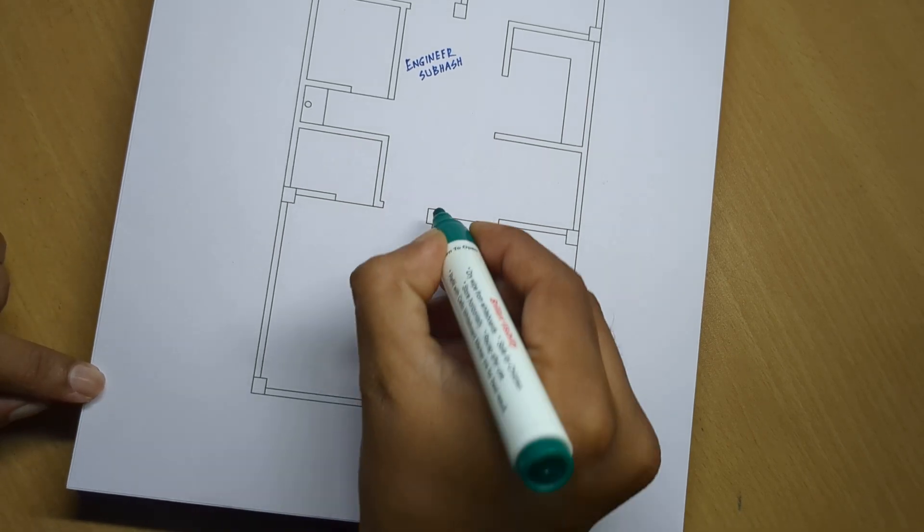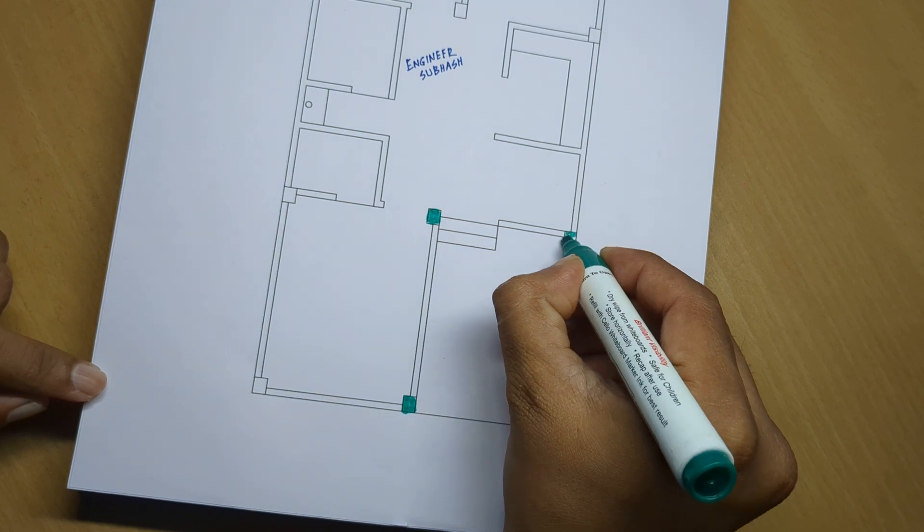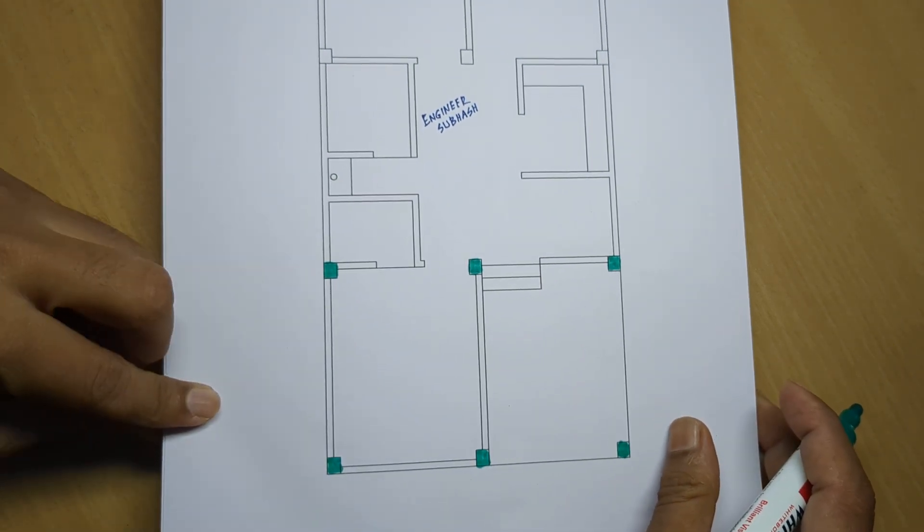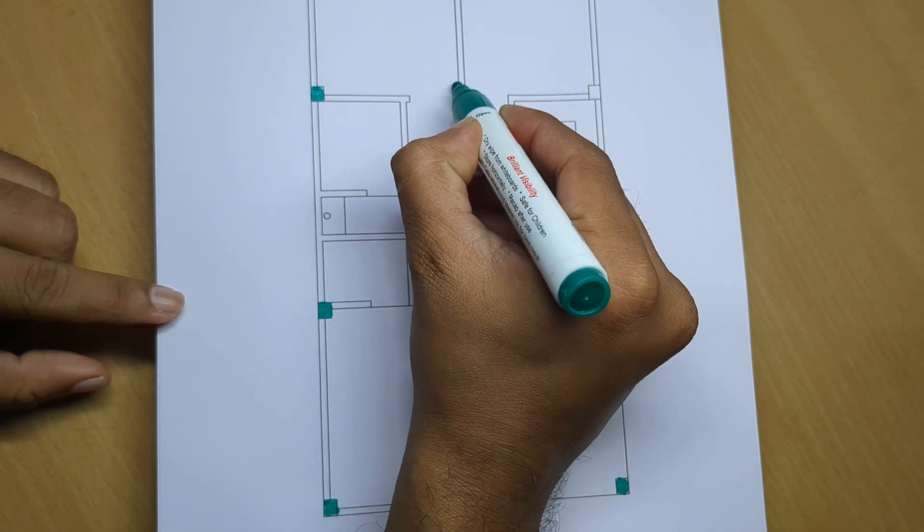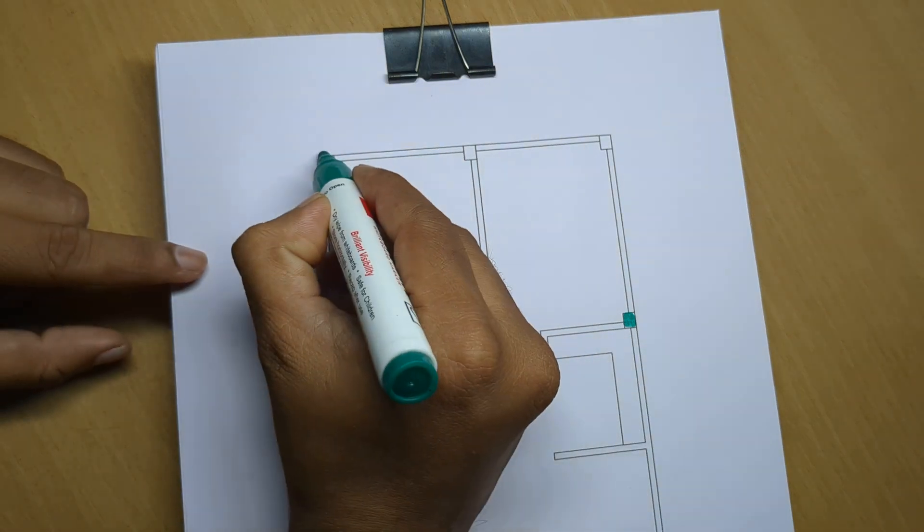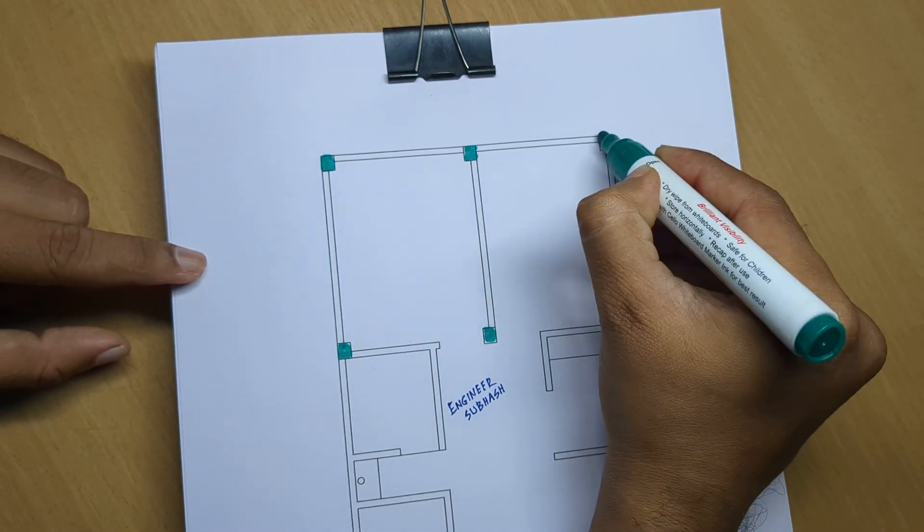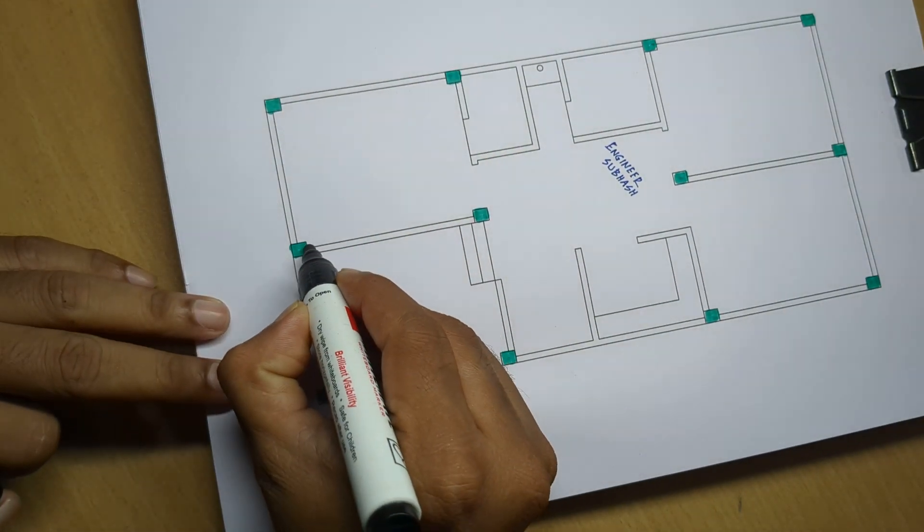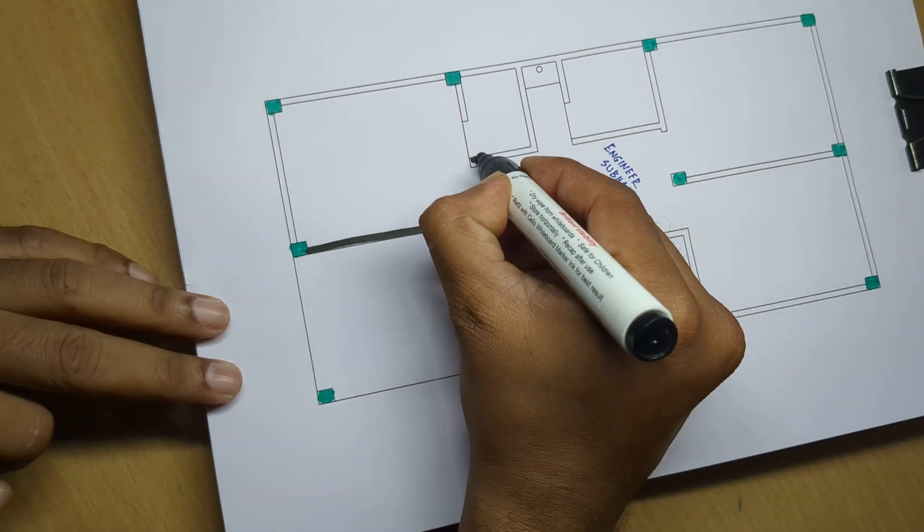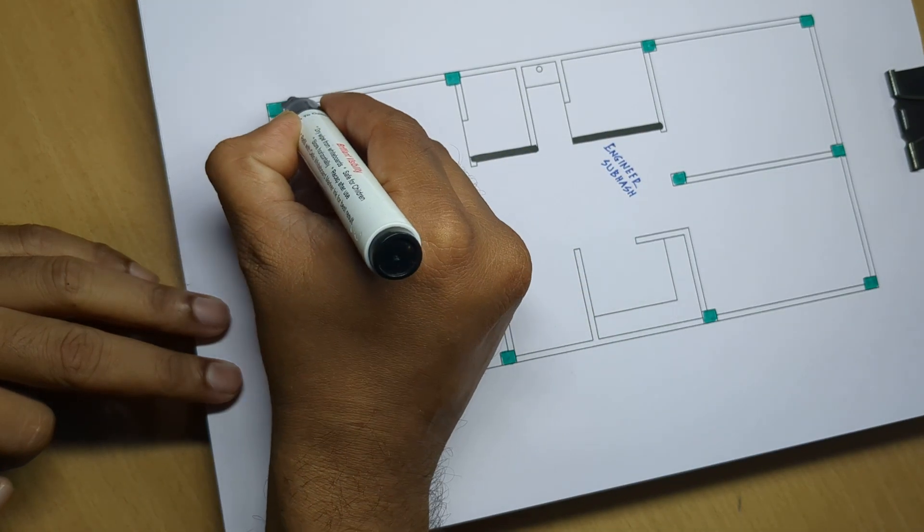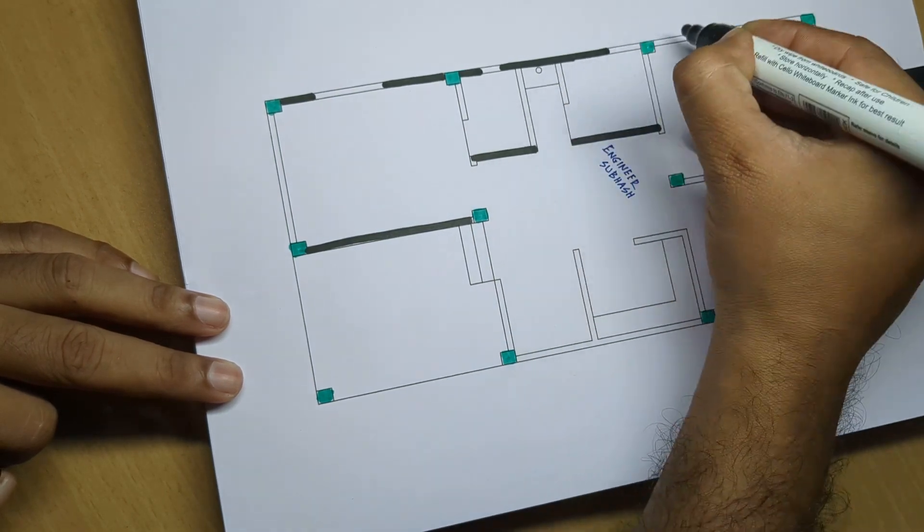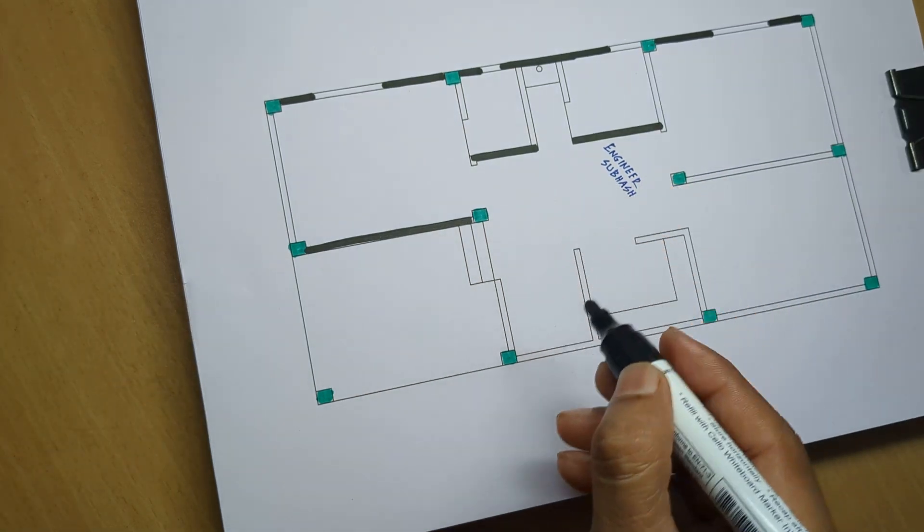3 bedroom or car parking, 6 number column, 7, 8, 9, 10, 11 and 12 numbers total column. And wall, 125 mm partition wall and window.